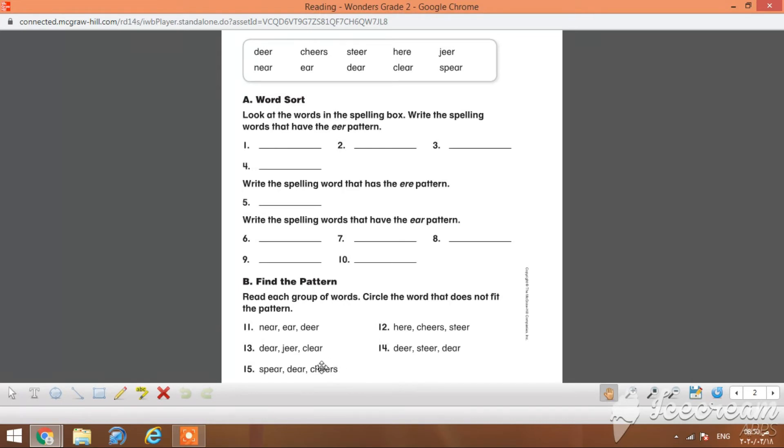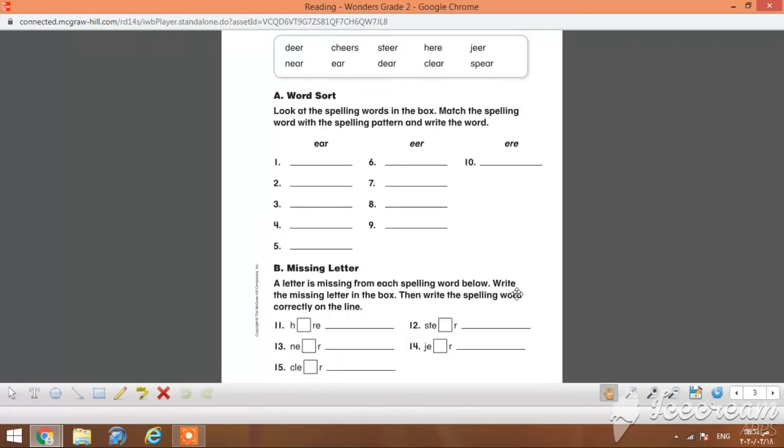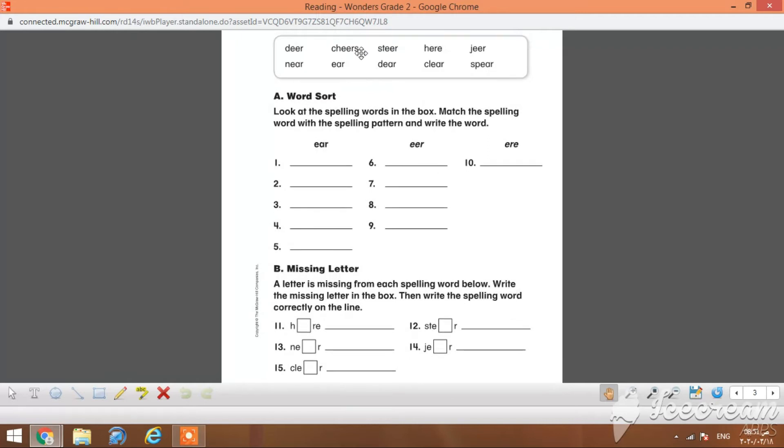Then on page 93, you will find another practice using the same list of words. Top of the page, you will write the words with E-A-R from number 1 to number 5, then double-E-R numbers 6, 7, 8, and 9, like steer, cheers, deer, and deer. Last one: one word with E-R-E, which is here. Right here, you will write here in this space provided.